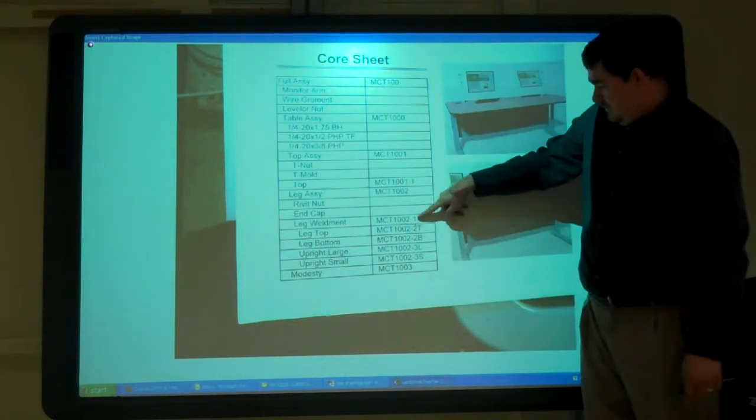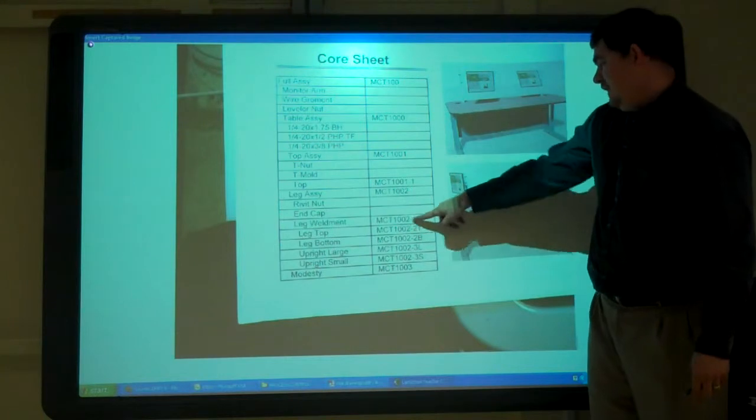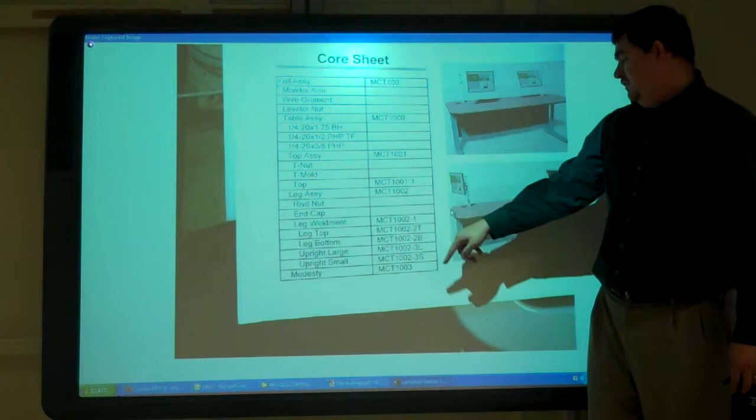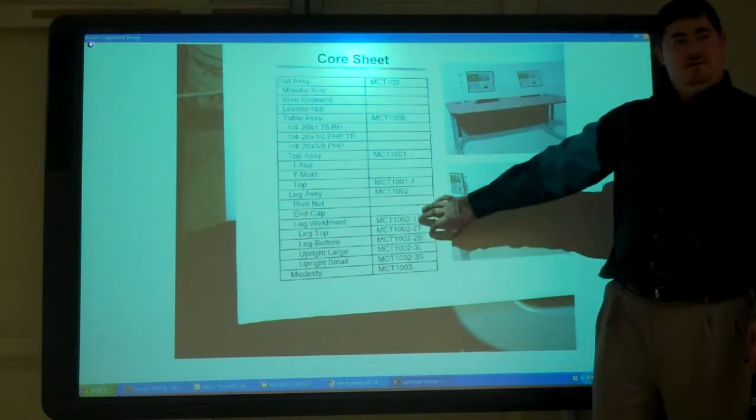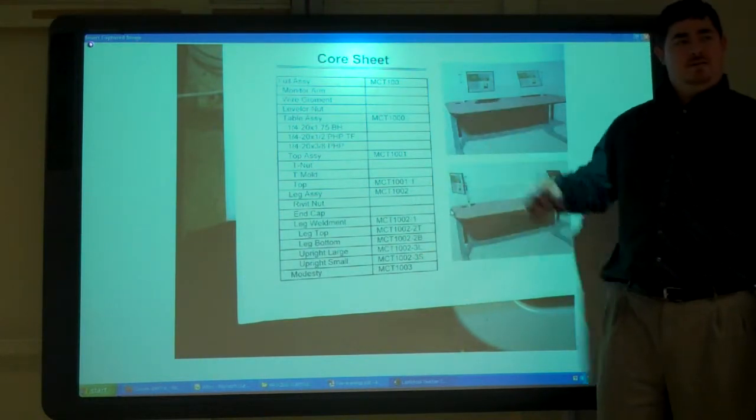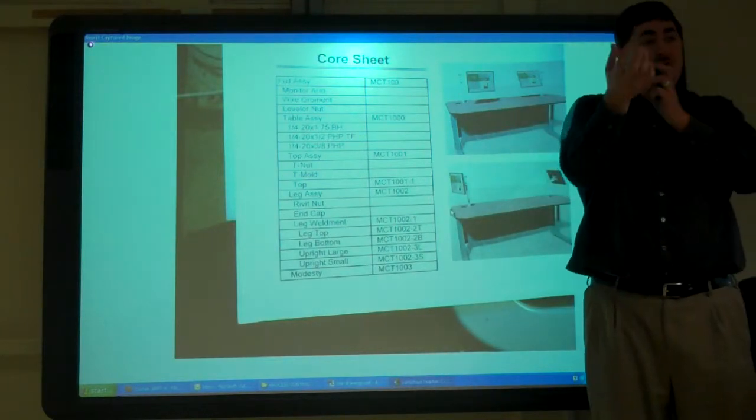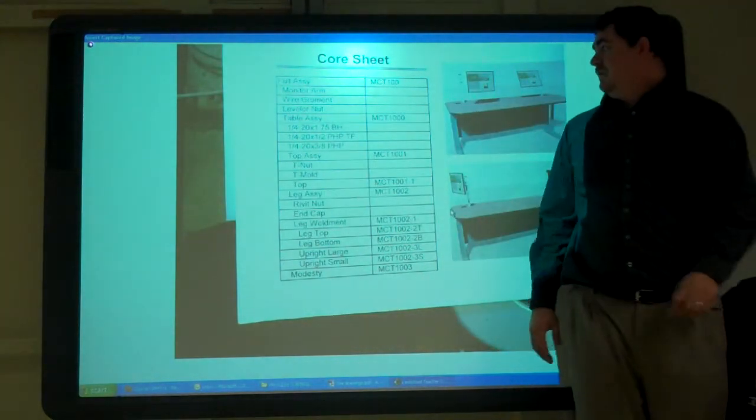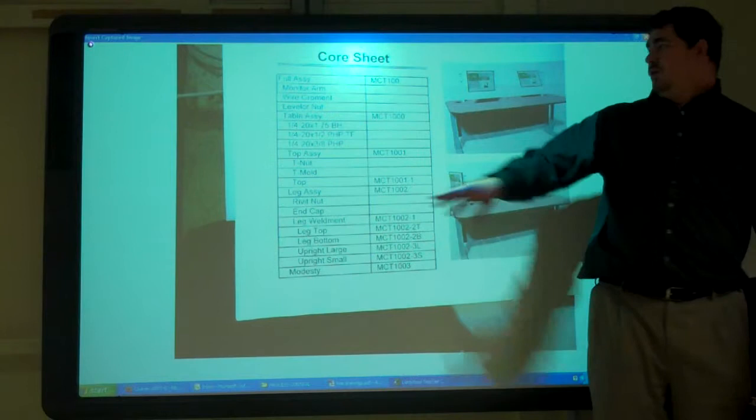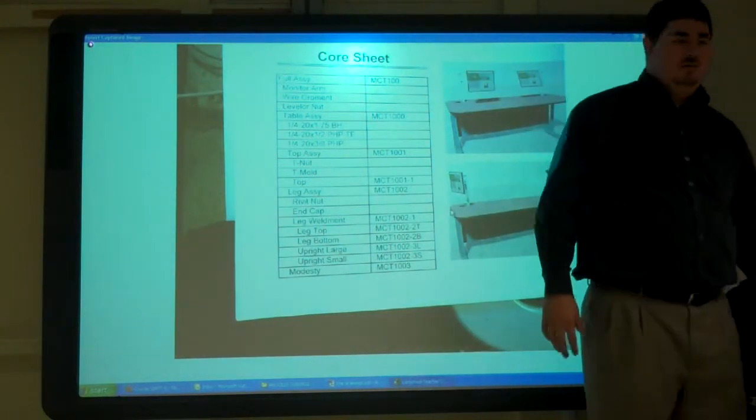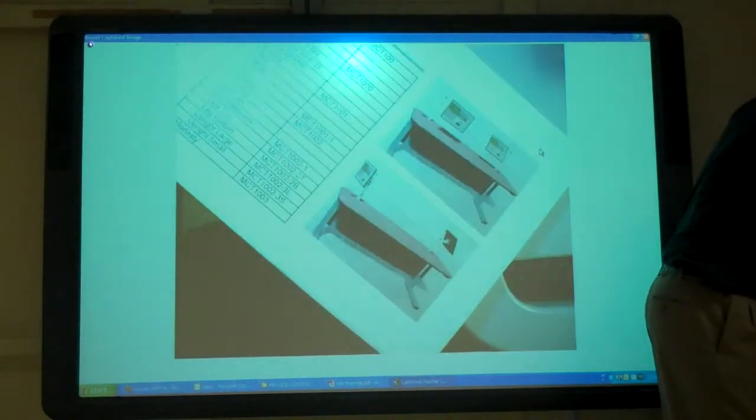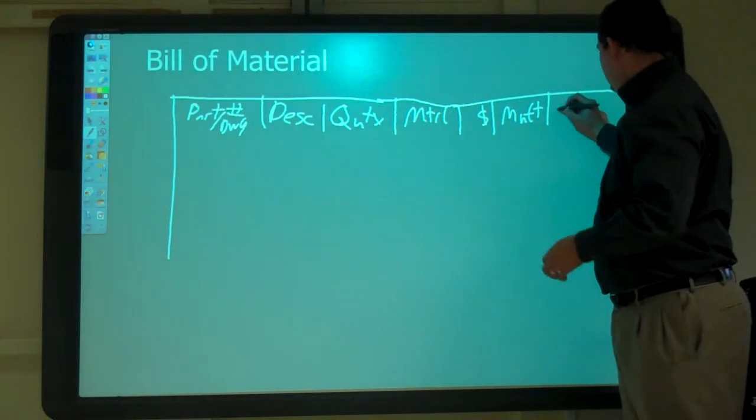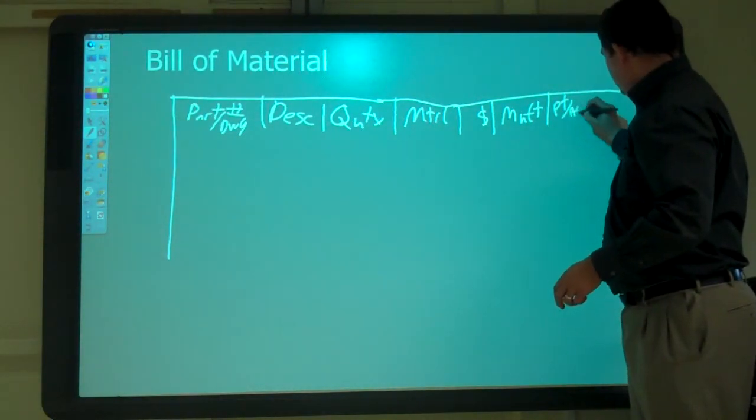When I do it, I usually keep a numbering system. I use full digits for assemblies, dashes for parts. Like under this weldment, it was 2-1 is the weldment, then 2-2T, 2-2B, 3L, 3S - those are the parts within that. You can do indents to help show that also.